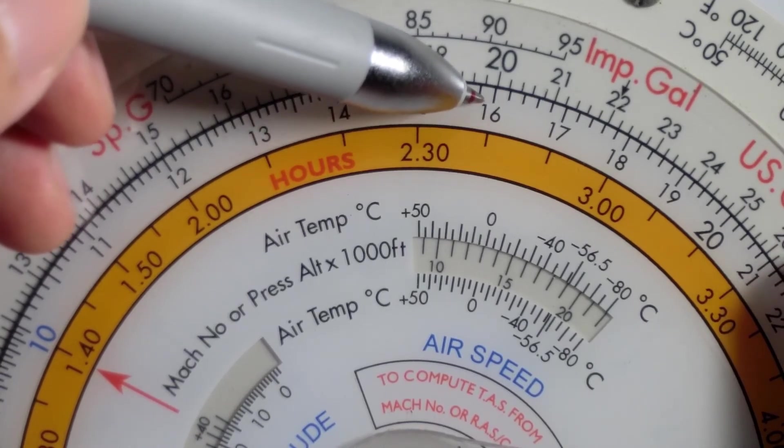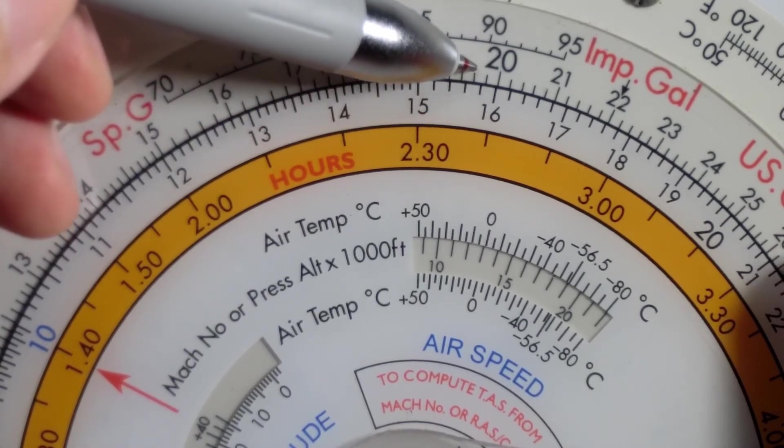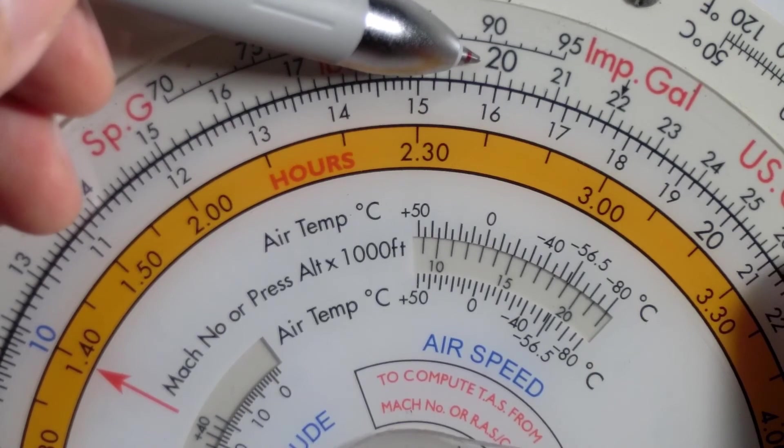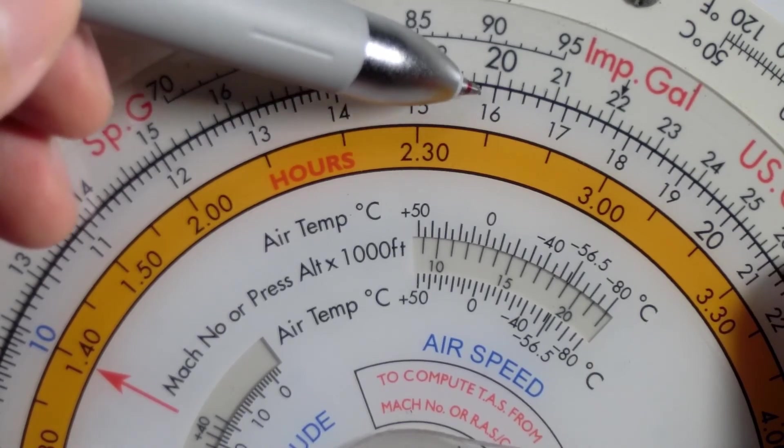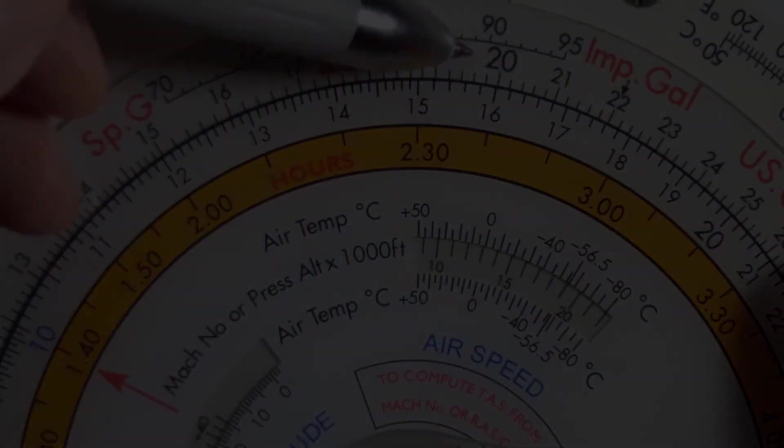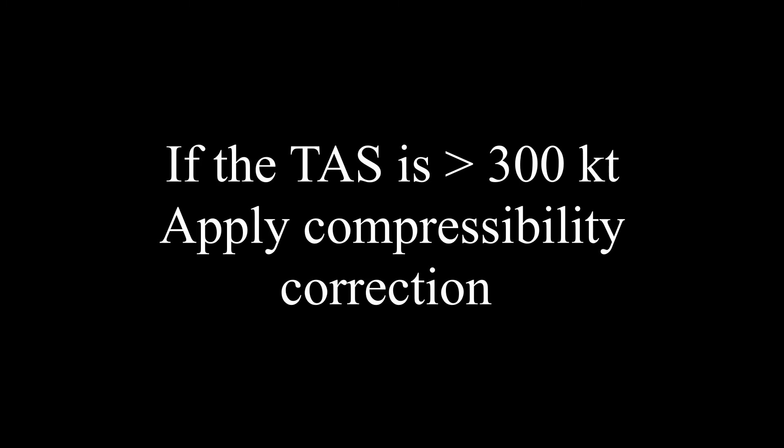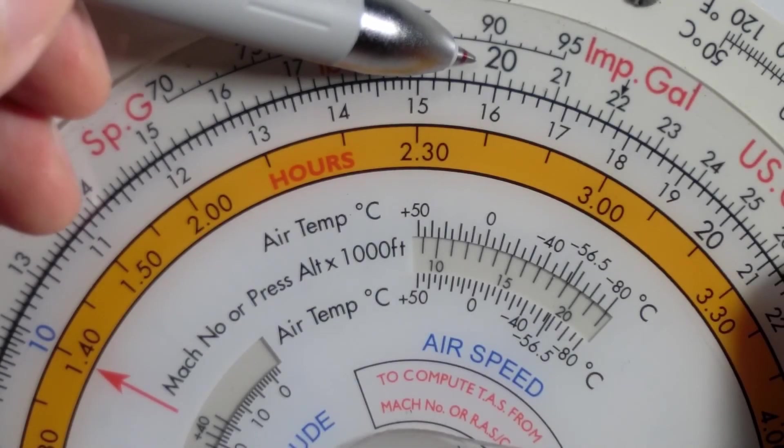Whenever we have a resulting true airspeed of below 300 knots, we will just take it as is. If we have a true airspeed of more than 300 knots, then we will apply a compressibility correction. And I will show you how to do that in the next video.